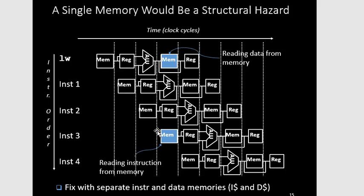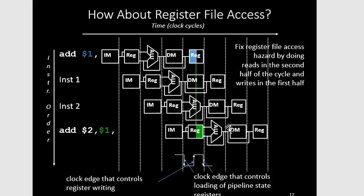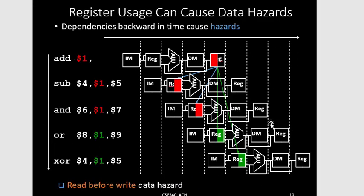To remedy the memory structural hazard, we can have separate memories — one instruction memory used in the fetch stage and one data memory used in the memory stage. For register file access, we divide each register cycle into two parts: the first half is the write operation and the second half is the read operation.